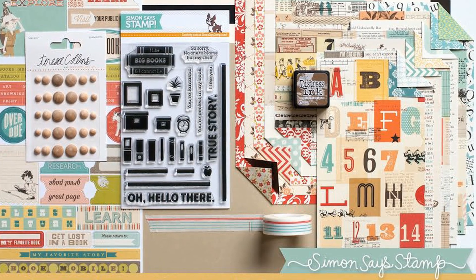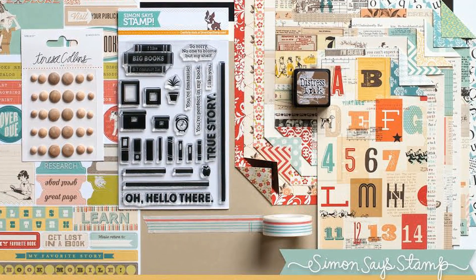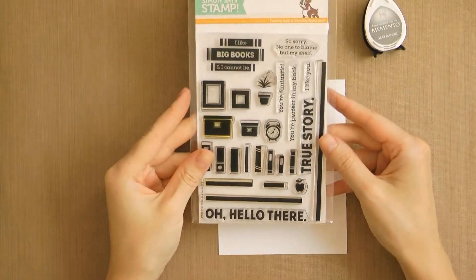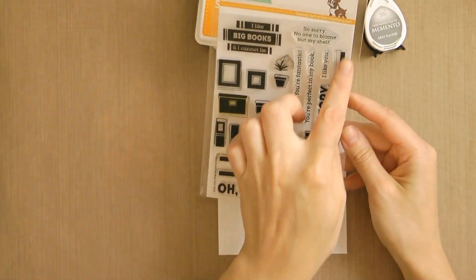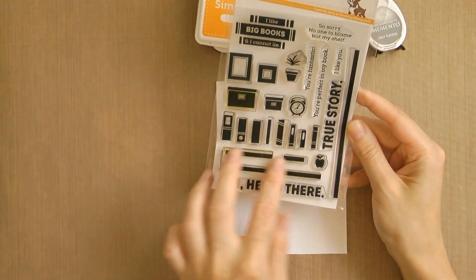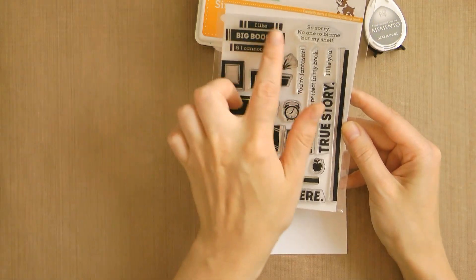For my card I'm mainly going to work with the stamp set and I think it's one of the cutest ones ever. You have a ton of fantastic images that work so very well together. You have these shelves, there's a very long one for a landscape card, a medium one and two shorter shelves.